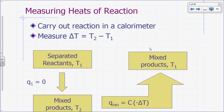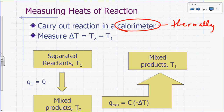How do we measure heats of reaction? In the lab, we carry out the reaction in a thermally insulated container with adiabatic walls — that container is called a calorimeter. We then measure the change in temperature when the reaction occurs.